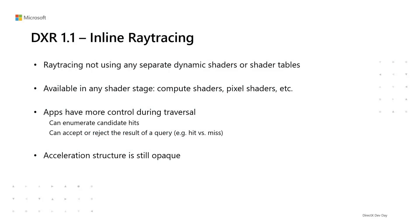The first addition to DXR is inline ray tracing. Inline ray tracing is an alternative form of ray tracing that doesn't use any separate dynamic shaders or shader tables. It is available in any shader stage, including compute shaders and pixel shaders. Inline ray tracing gives apps more control during traversal, such as enumerating candidate hits and accepting or rejecting the result of a query. Note that both the dynamic shading and inline forms of ray tracing use the same opaque acceleration structures.